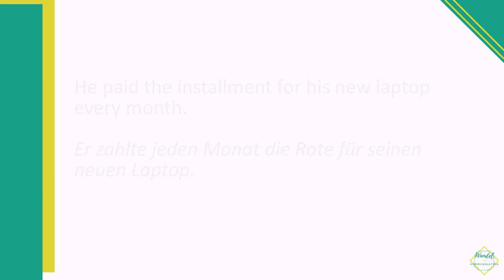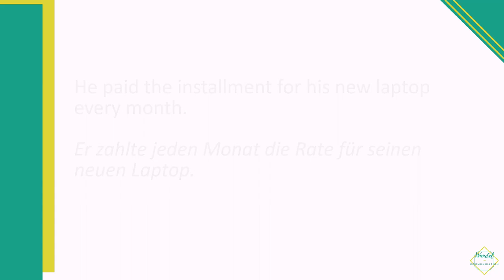Number six: let's say you borrow money from the bank and then you pay it back every month, bit by bit. This is called an installment — die Rate. For example: 'He paid the installment for his new laptop every month.' In German: Er zahlte jeden Monat die Rate für seinen neuen Laptop.